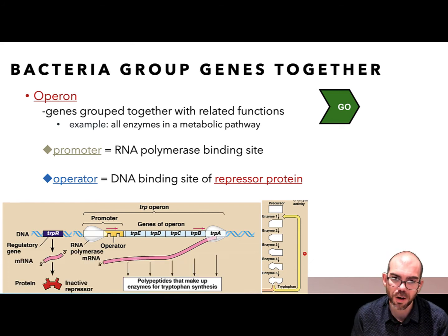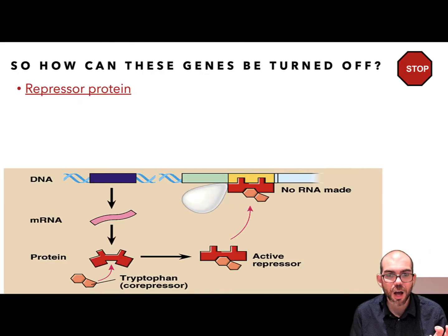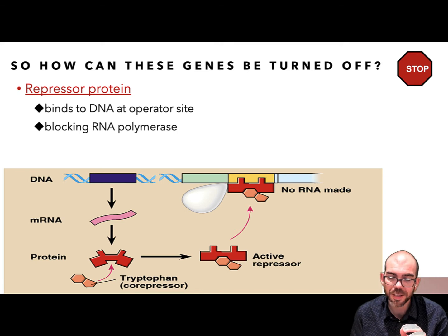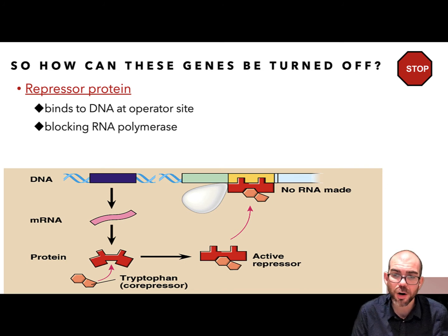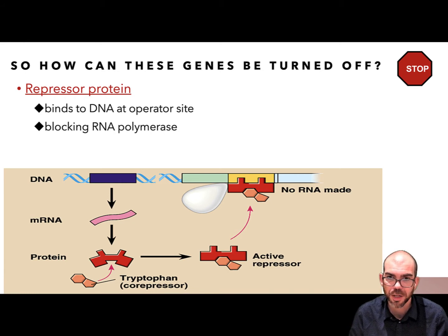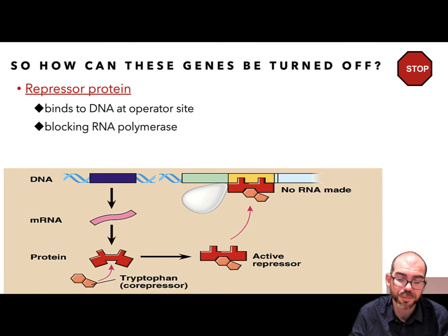What if I want to turn the gene off? To do that, there's something called a repressor protein. A repressor protein can bind at the operator — that space between the promoter and the gene. Once it's bound, it prevents RNA polymerase from attaching and transcribing, effectively turning the gene off. So bacteria use repressors to turn genes off and remove the repressor to turn genes on.